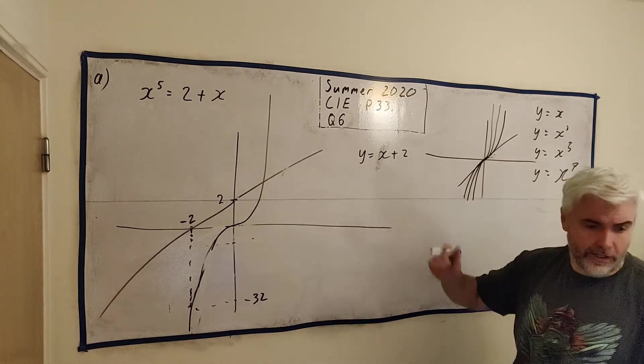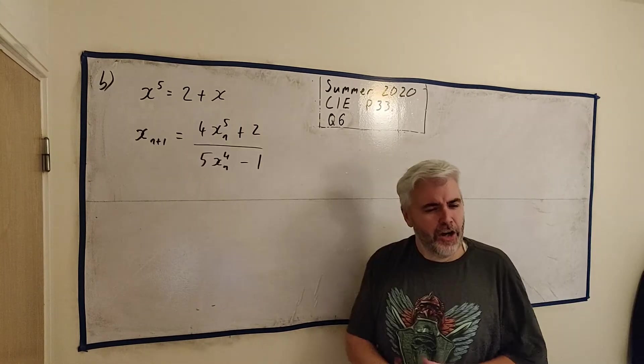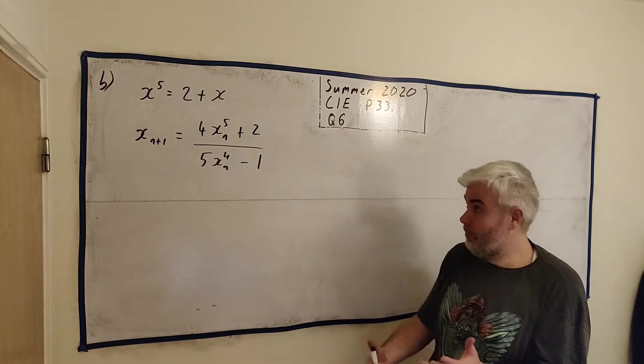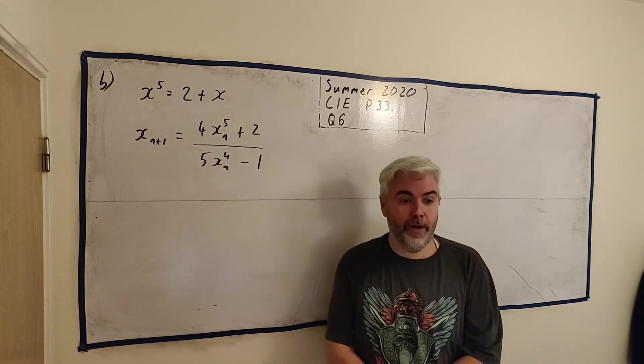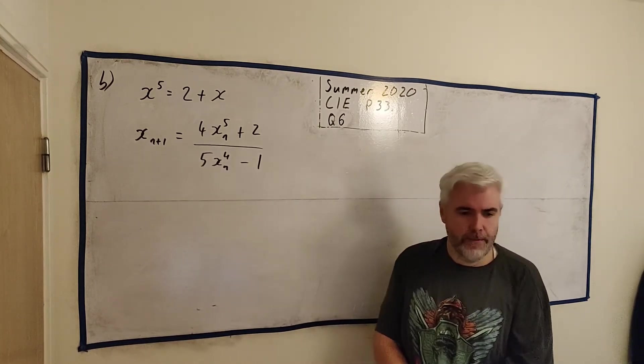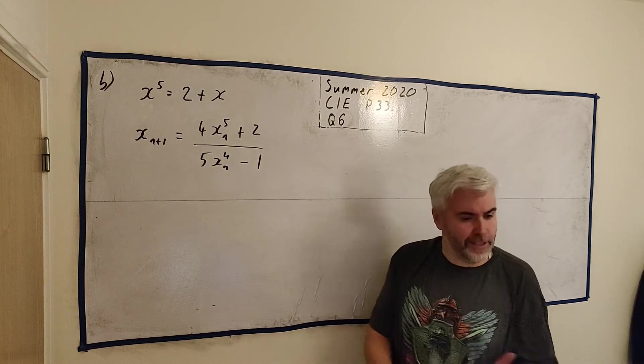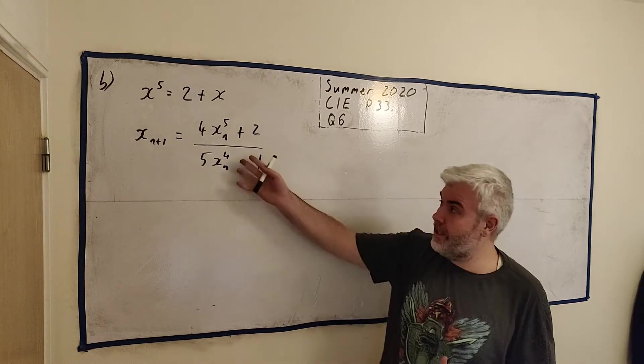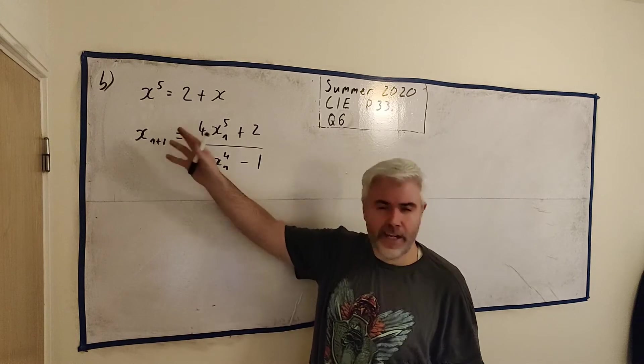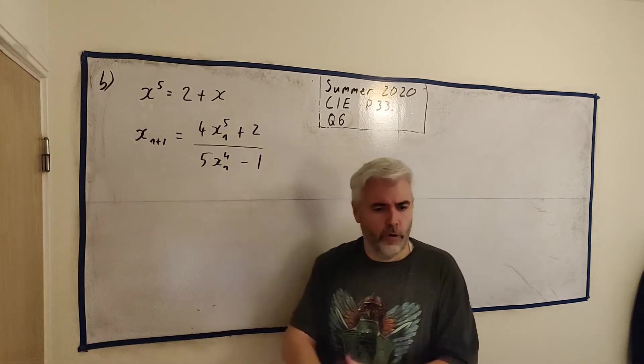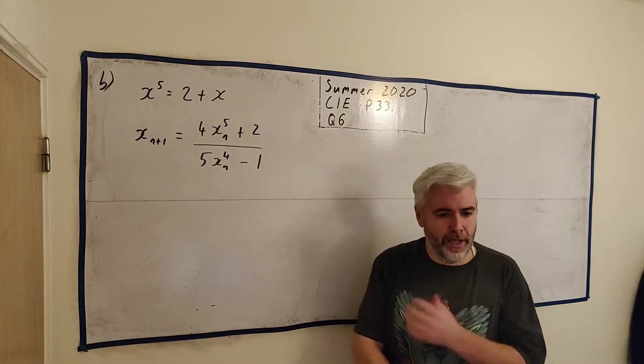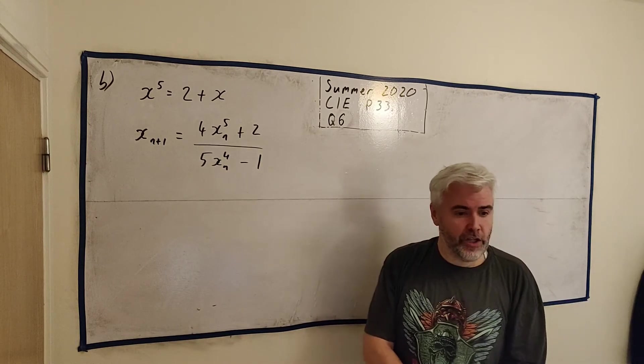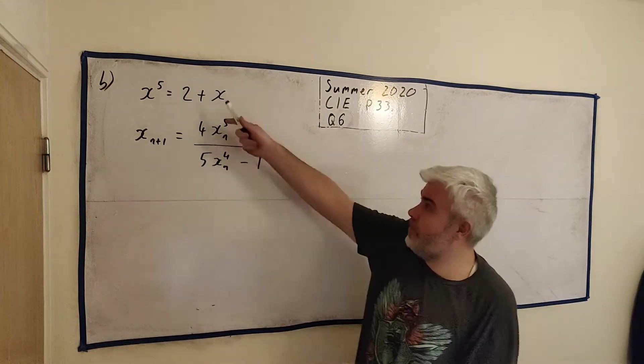For part B, let me clear off some of this. For part B, lots of students had difficulty doing part B while they were able to do part C. It asks you to show that the sequence of values generated by this formula, so that you'll get like x1, x2, x3, x4 generated from this formula, and show that they converge to the root of the equation in part 1.